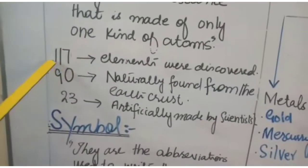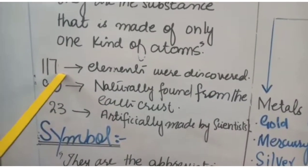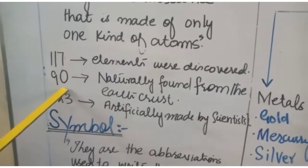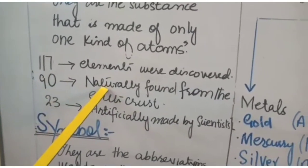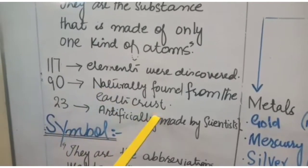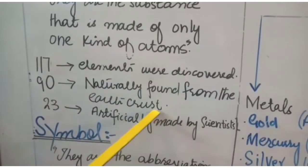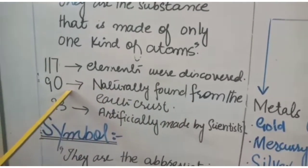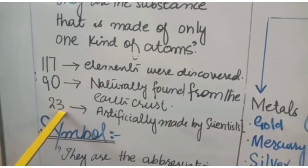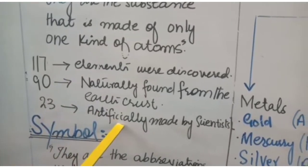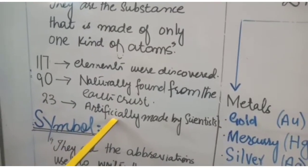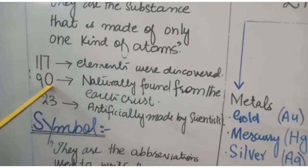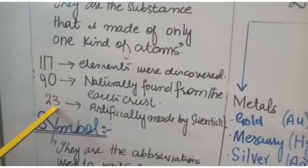Now we have 117 elements discovered. Out of 117, there are 90 elements that occur naturally in the earth's crust. And 23 elements have been made by scientists — these are artificial. So 117 is total, 90 is natural and 23 is artificial.